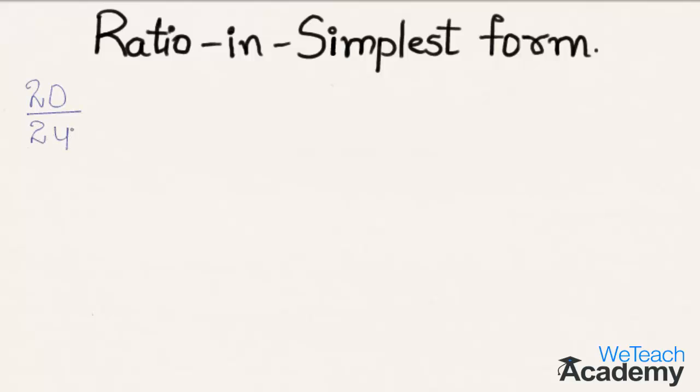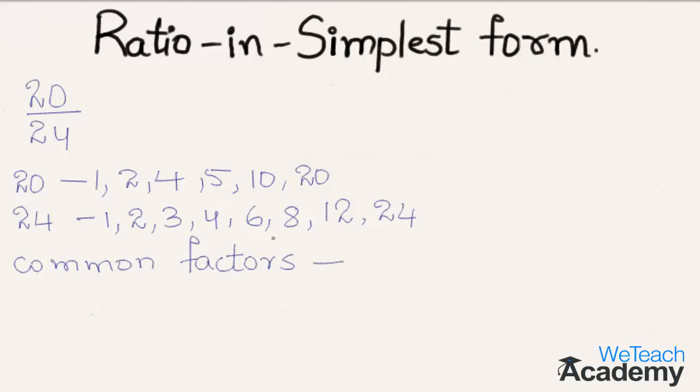To write it in simplest form, let us consider the factors of 20 and the factors of 24. Now let us write the common factors of both the numerator and the denominator.